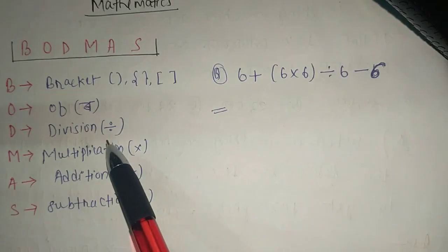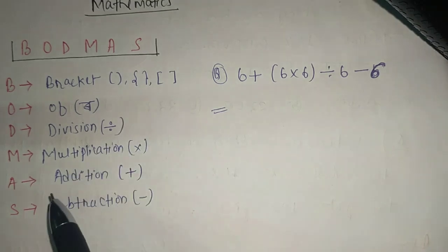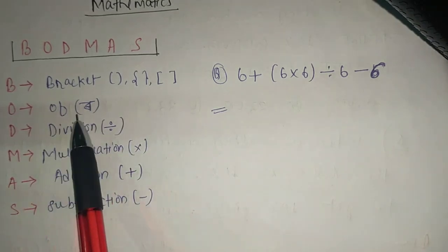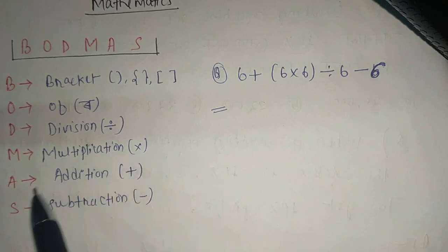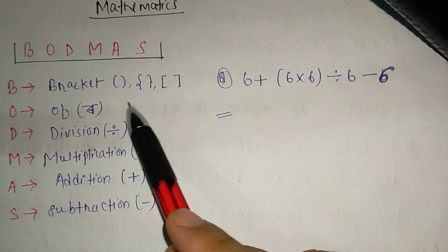we will apply B for Bracket, O for Of (Of means row), D for Division, M for Multiplication, A for Addition, S for Subtraction. Before we solve the problem,